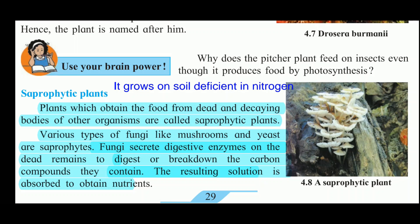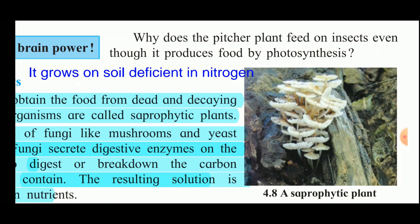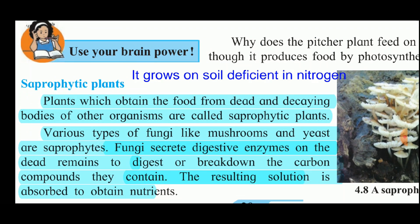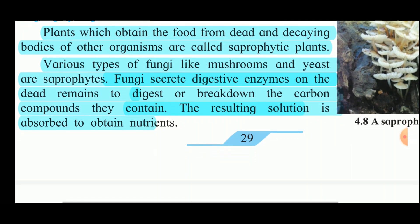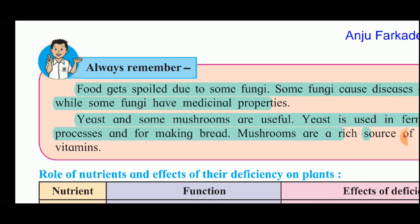Next are saprophytic plants. A mushroom is an example of a saprophytic plant — you can see mushrooms growing on trees or in marshy areas. Plants that obtain food from the dead and decaying bodies of other organisms are called saprophytic plants. Various types of fungi like mushrooms and yeast are saprophytes. Fungi secrete digestive enzymes on dead remains to break down the carbon compounds they contain, and the resulting solution is absorbed to obtain nutrients.